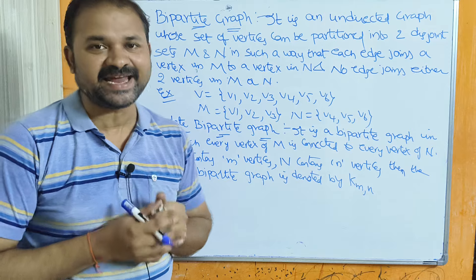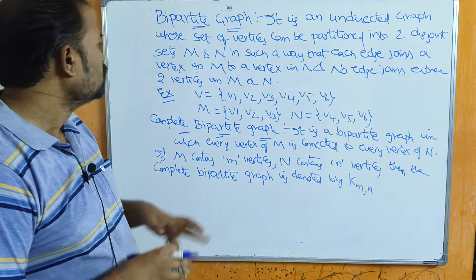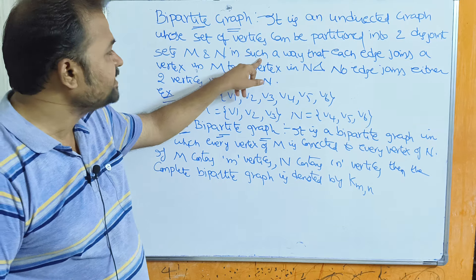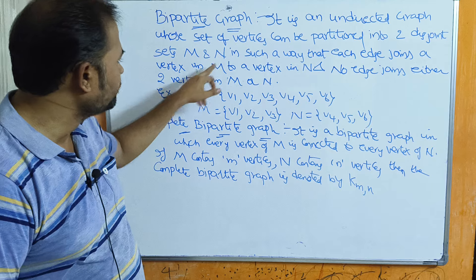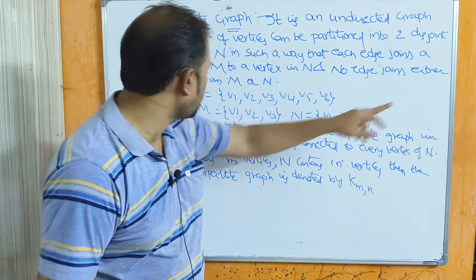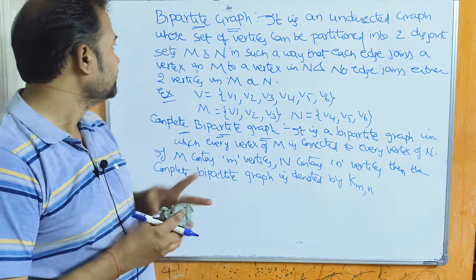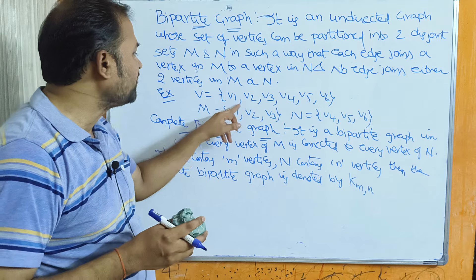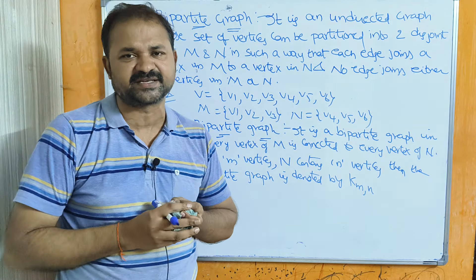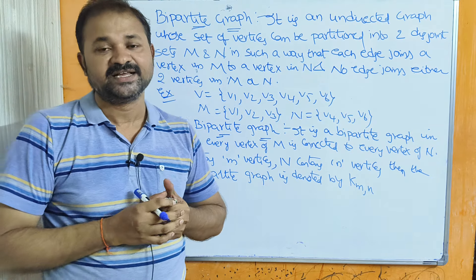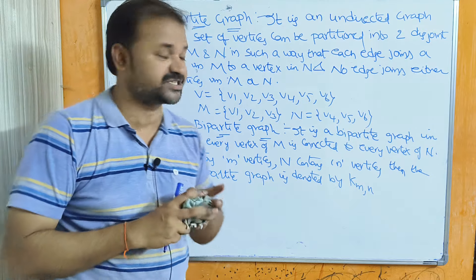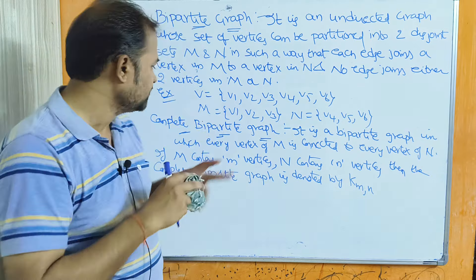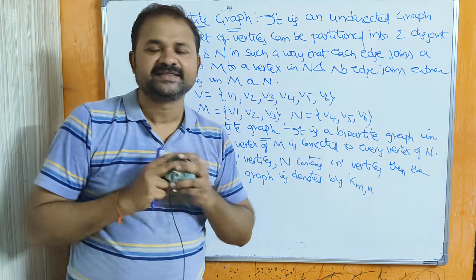Now let us discuss about bipartite graph. It is an undirected graph whose set of vertices can be partitioned into two disjoint sets M and N, in such a way that each edge joins a vertex in M to a vertex in N, and no edge joins two vertices both in M or both in N. So the vertices are divided into two disjoint sets — for example if V = {V1, V2, V3, V4, V5, V6}, these six vertices can be divided into M = {V1, V2, V3} and N = {V4, V5, V6}.